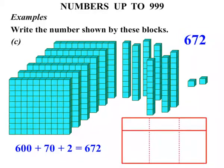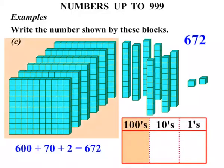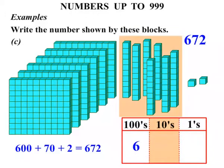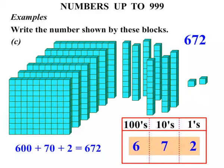Now using our table with columns. Ones, tens, hundreds. How many hundreds did we have? We had six. How many tens did we have? We've got seven. And how many ones? Two. So we're looking at the number there - six, seven, two - six hundred and seventy-two.